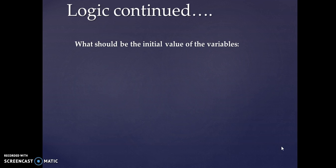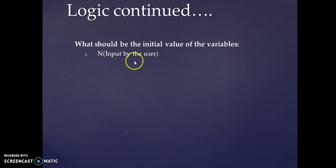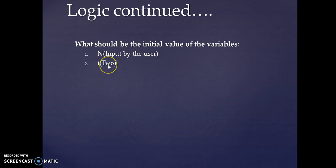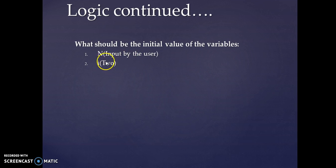What should be the initial value of the variables? The value of n is provided by the user. The variable i is initialized with 2, because factorial is the product of all numbers from 1 to n, but multiplying any number by 1 results in no change of value, so we skip 1 and start at 2 to save time.